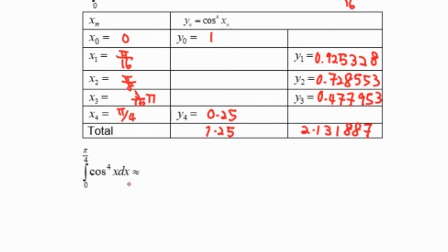Then we apply the formula for this integral: h/2 times y₀ plus y₄, which equals 1.25, plus 2 times y₁, y₂, y₃.